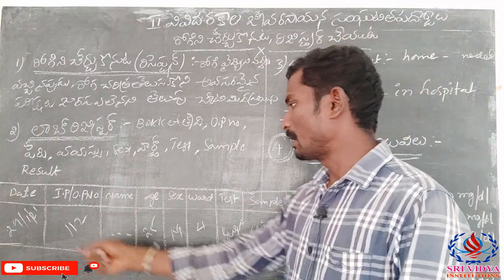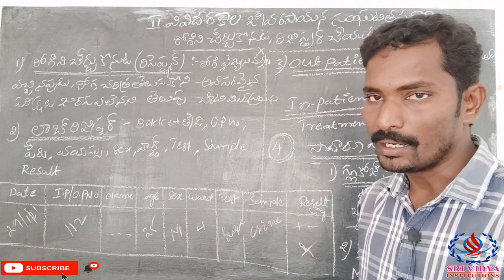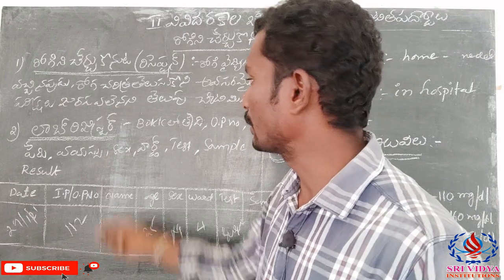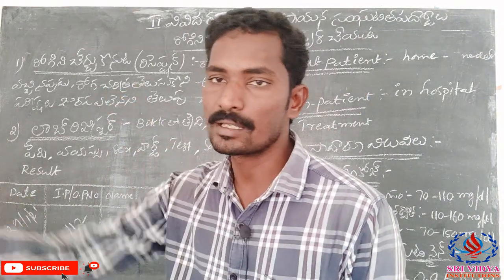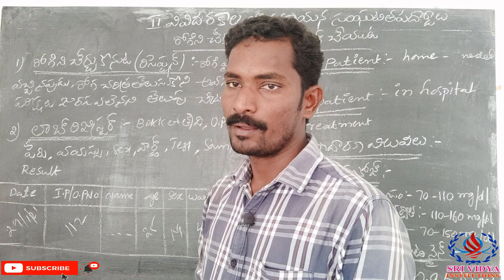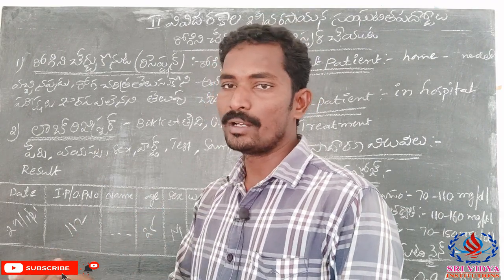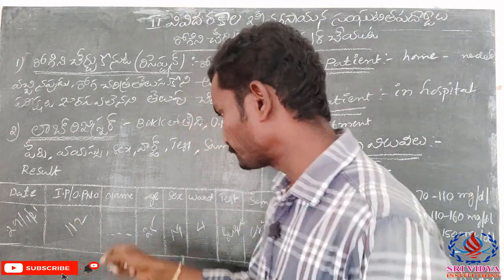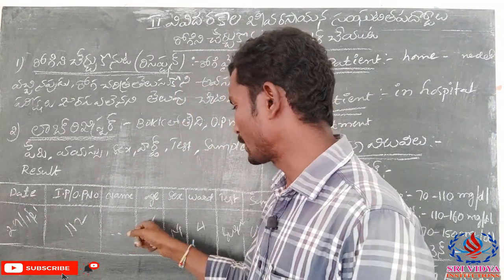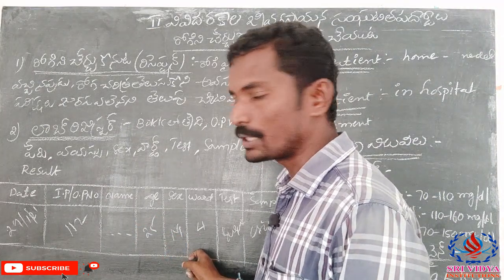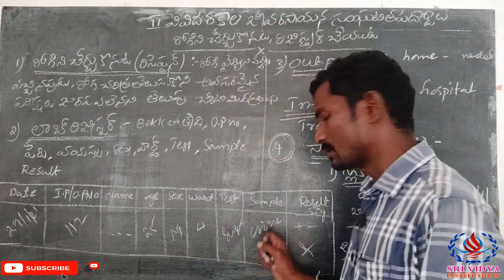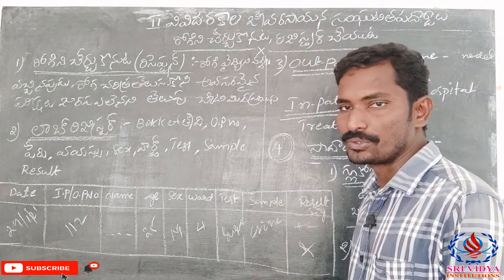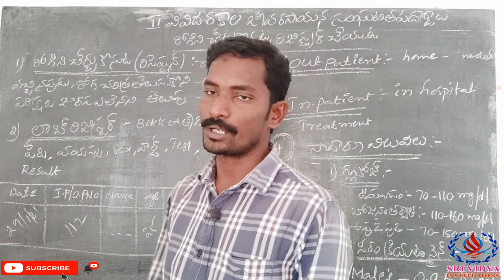This is a lab register order. First of all: date, IP number or OP number, name, age, sex, ward, test, sample, and the result — positive or negative — and the signature. This is the complete lab register order.